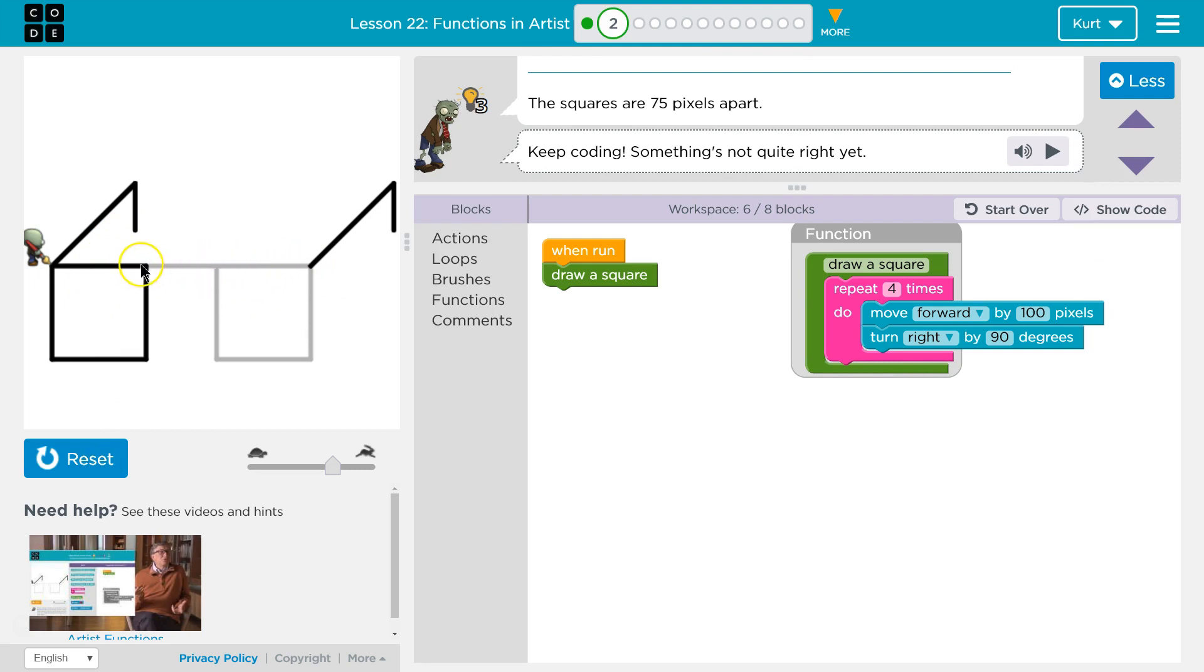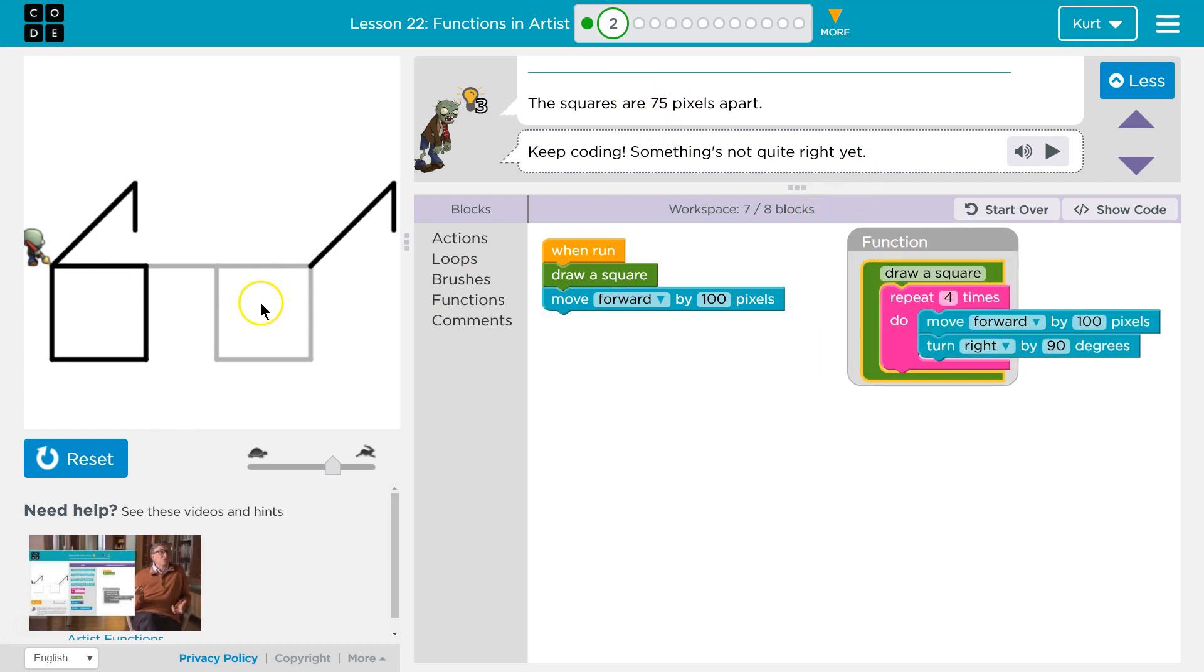Okay, so let's just go forward. We need to draw that line, so they're 75 apart. So we're going to move forward by 100, but that won't be enough, right? Are 75, because our square, that will just get us to here.